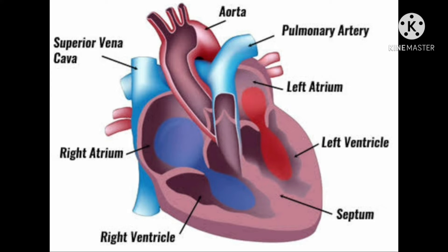The left side of the heart is completely separated from its right side by means of a partition wall called a septum, which is made of a thick muscle. The septum in the heart prevents the mixing of oxygenated blood on its left side with the deoxygenated blood on its right side.